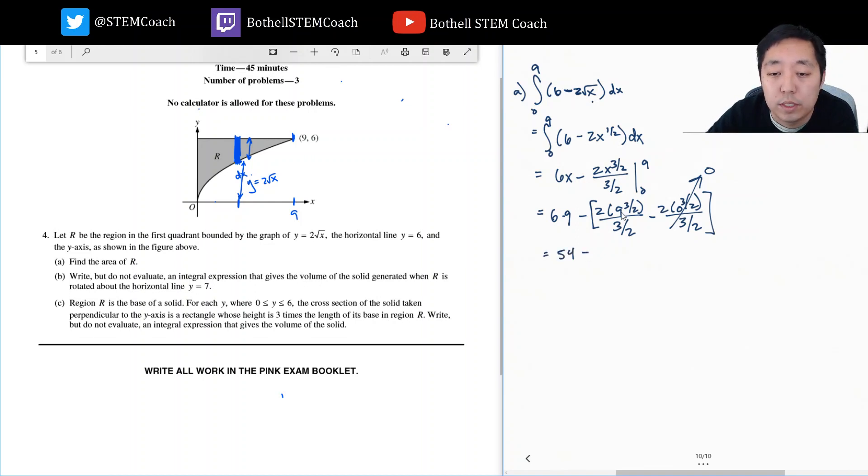This is 54 minus, let's figure this out. 2 times 9 to the 3 halves: well, the square root of 9 is 3, 3 cubed is 27, so that's 54 over 3 halves, which is times 2 thirds. So if I do 54 times 2 thirds, I can do 54 divided by 3, that's 18. 18 times 2 is 54 minus 36, that equals 18.